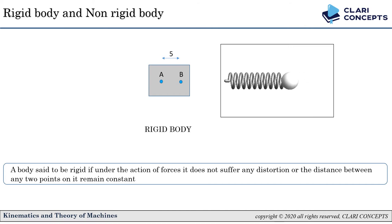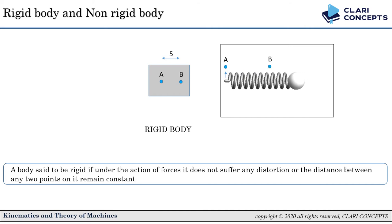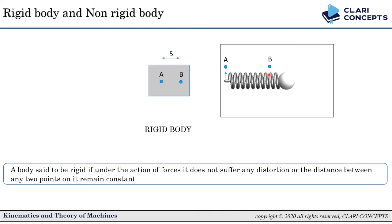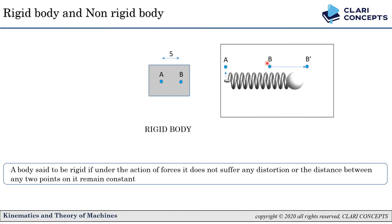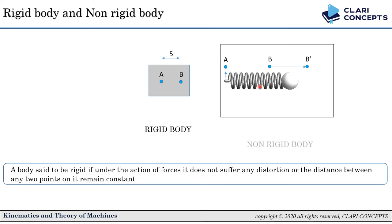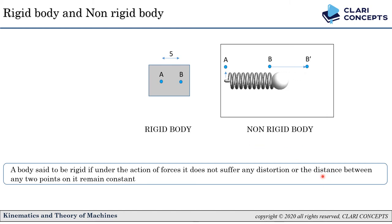Now consider a spring with fixed point A and free end point B. When we apply a tensile load, the distance changes from A–B to A–B', meaning there is distortion and shape change. Therefore we call this a non-rigid body. The distance between any two points is not remaining constant — it is changing — therefore it is a non-rigid body.